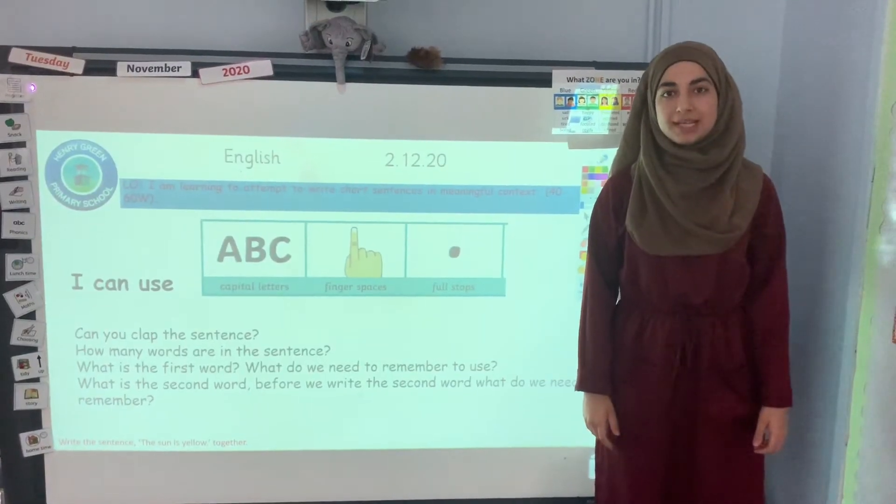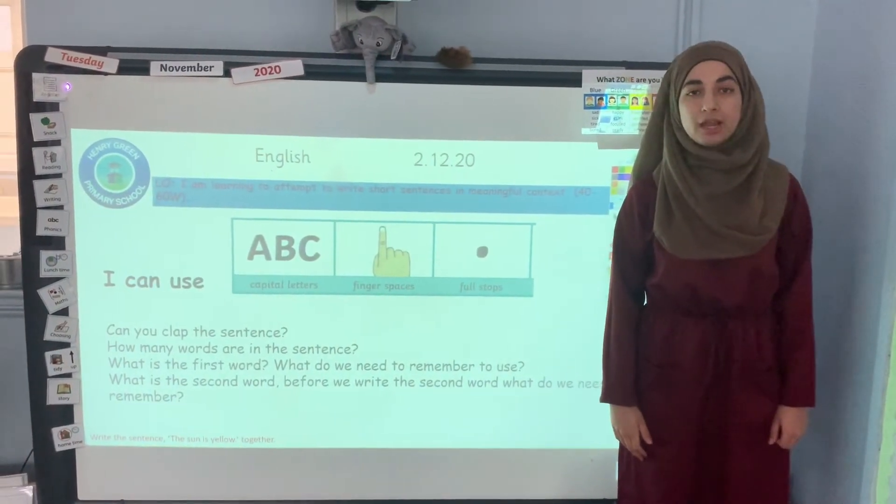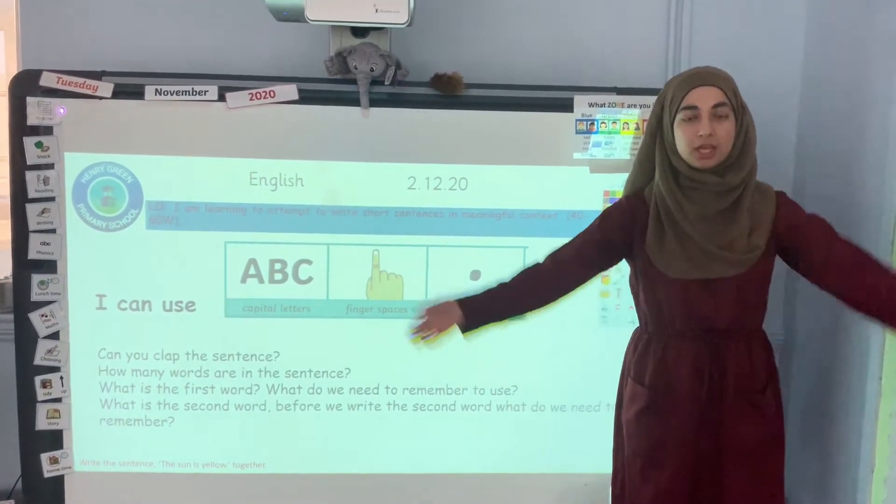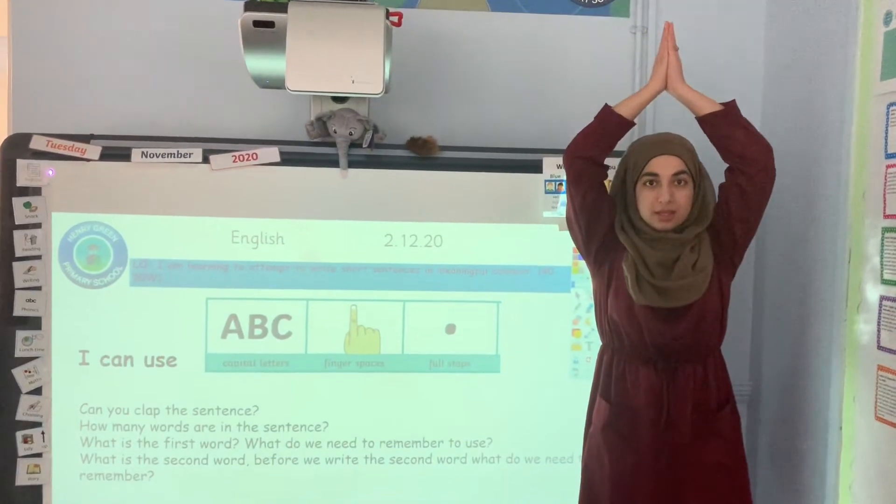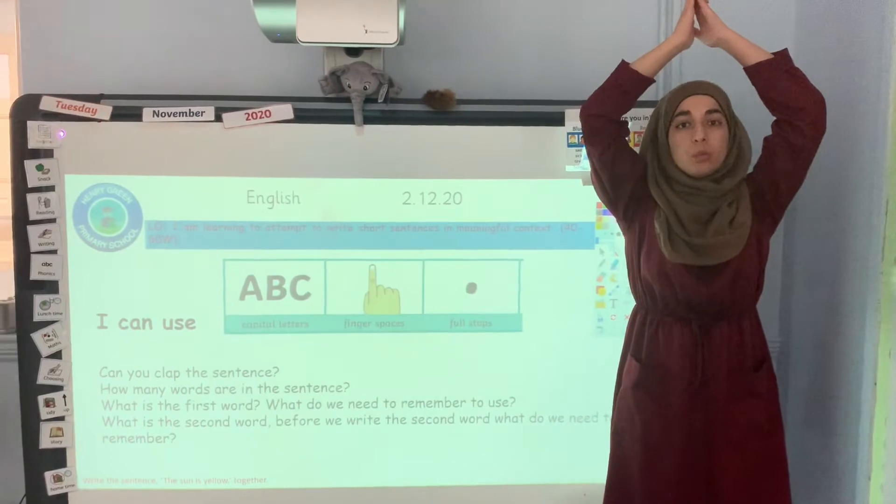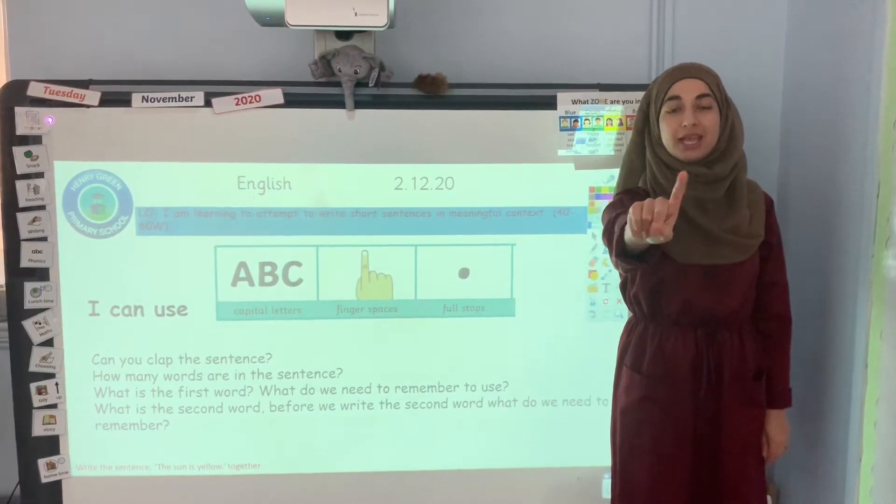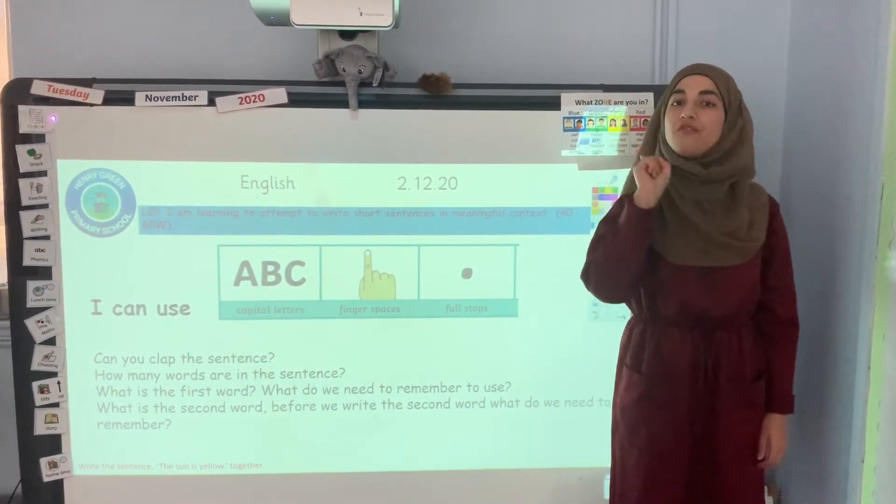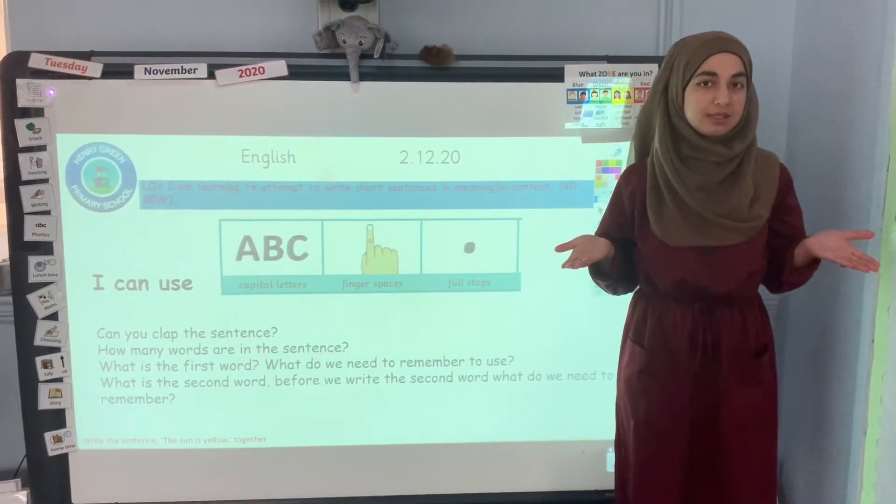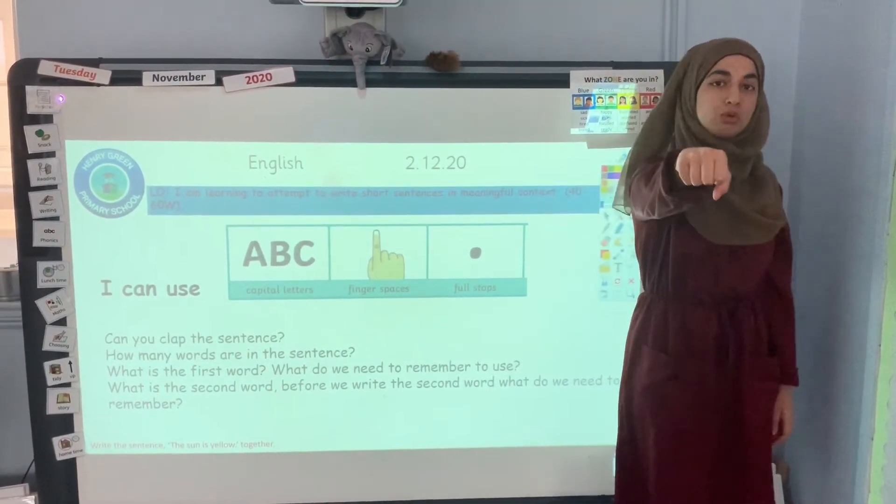We are going to use the actions to write the sentence, the sun is yellow. The first word is the. So we need to use a capital letter. The. And then we have a new word. So before we write our new word, we need to use a finger space. Can everyone do finger space? Sun, finger space, is, finger space, yellow. What comes at the end of our sentence? Good job. It's full stop.